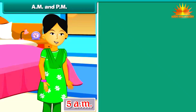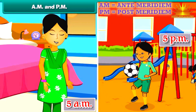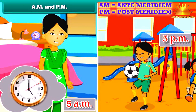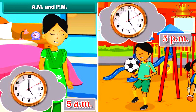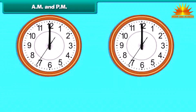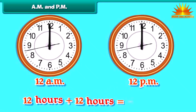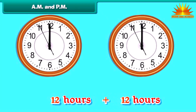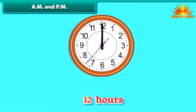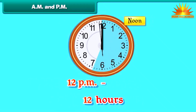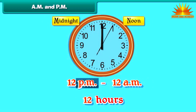Your mother wakes up at 5 o'clock in the morning, and you go out to play at 5 o'clock in the evening — it means the clock strikes 5 twice in a day, once in the morning and once in the evening. This is true of every hour from 1 to 12, because there are 24 hours in a day. The hour hand touches each number from 1 to 12 twice in these 24 hours. The 24 hours are divided into two periods of 12 hours each. The first 12-hour period is from 12 midnight to 12 noon, and AM is used to denote time in this period. The second 12-hour period is from 12 noon to 12 midnight, and PM is used to denote time in this period.